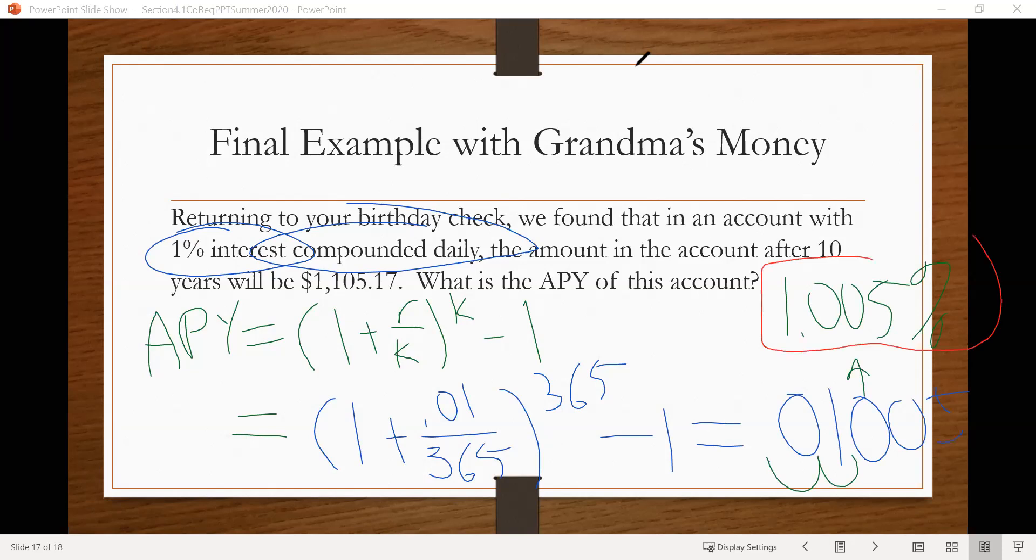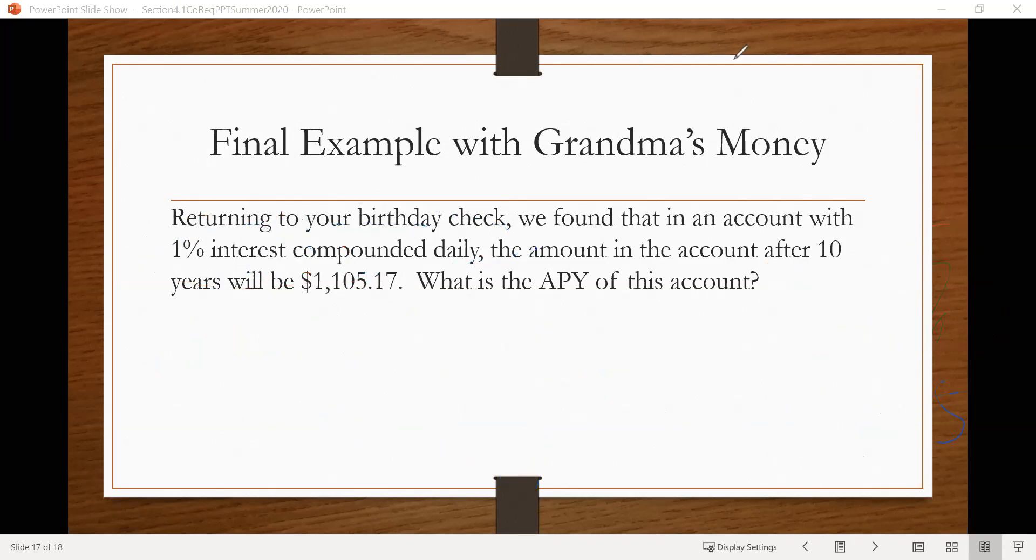Okay. And notice, even though it's not much, that is larger than what the APR was. The annual percentage rate was 1%, but compounding daily actually gave us 0.005% more. All right. One more example.